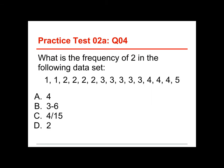Number four. What is the frequency of two in the following data set? The answers are four, three to six, four over fifteen, or two. The answer is four, because the score or value of two occurs four times. We have one, one, two, two, two, two. The frequency is how often it happens.